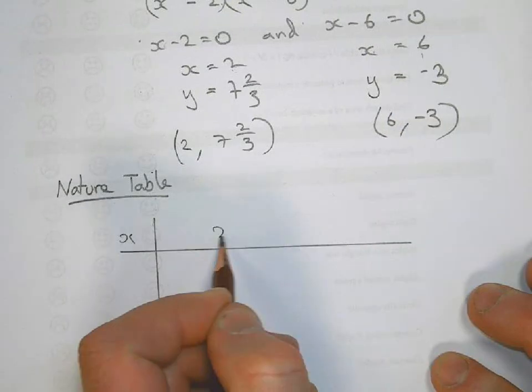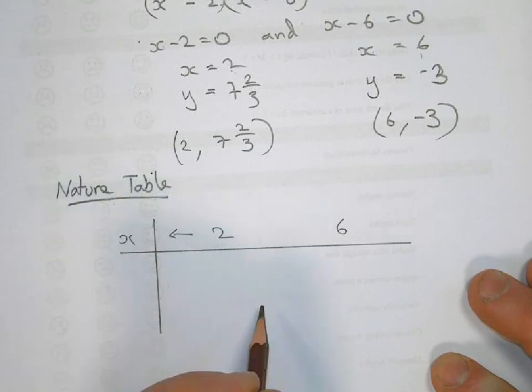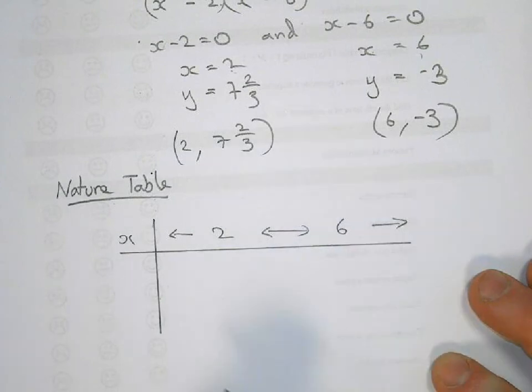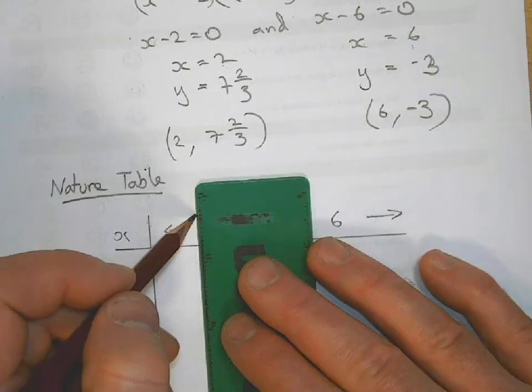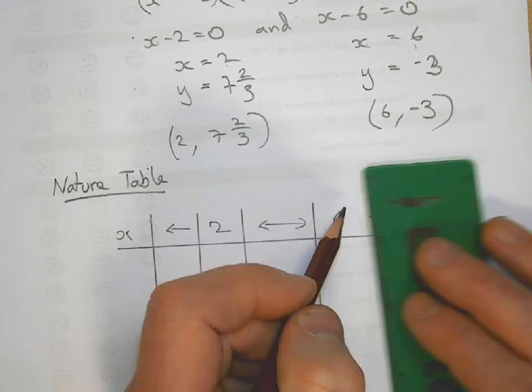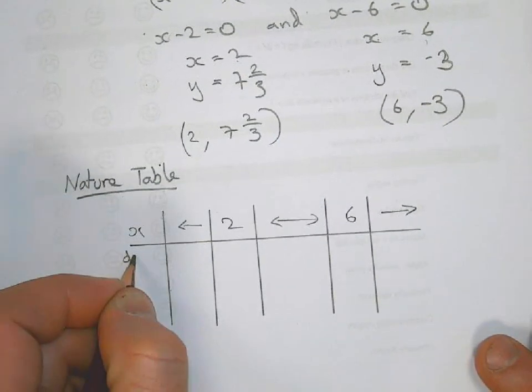And what we want to work out is what's happening just before the 2, what's happening in between the 2 and the 6, and also what's happening after the 6. Now what I mean by what's happening is we're trying to work out what the gradient is doing, so whether it's a positive gradient or whether it's a negative gradient. So we're just going to be looking at dy/dx.